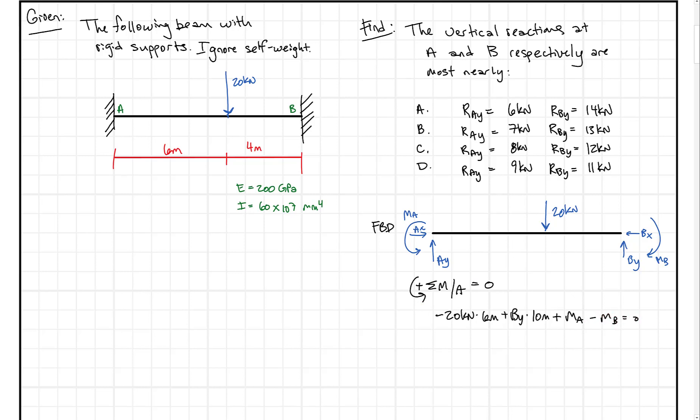Right away you see there's a problem, because we're trying to solve for By but we also have moment at A and moment at B that we don't know - they're unknown moments. That's because it's an indeterminate structure. When you get there, you have to take a step back and think, okay, what else can we do with an indeterminate structure to get our answer?